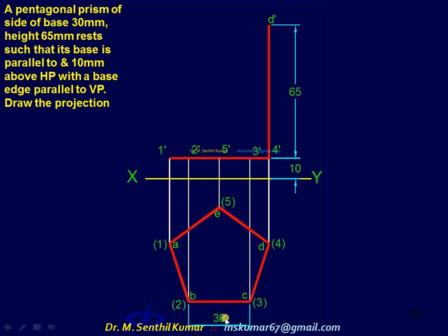These vertical edges are nearer for this observer. So one, two, three, four, five are visible. The vertical edge E5 is not visible. It is hidden. So that is shown by dash thick dash line type.